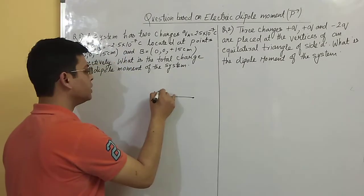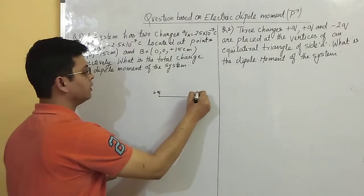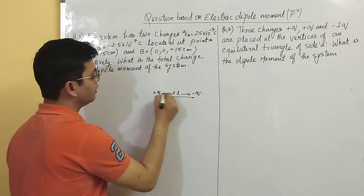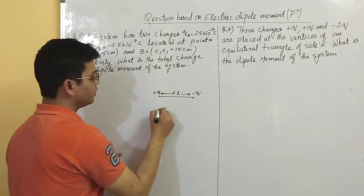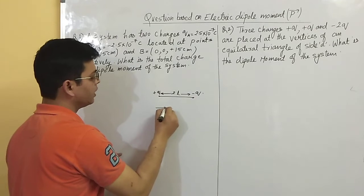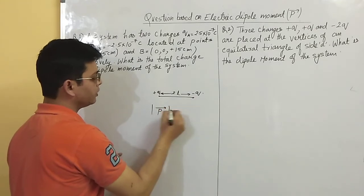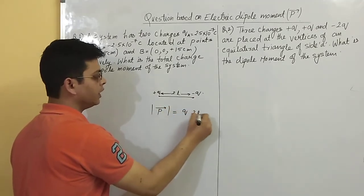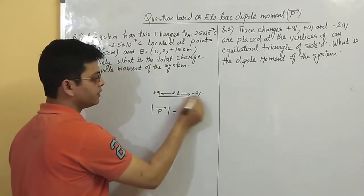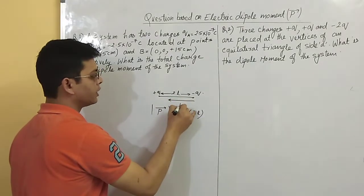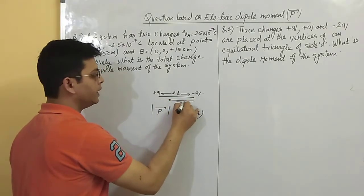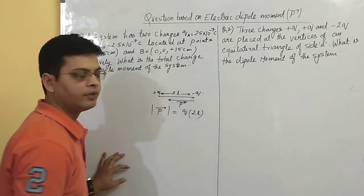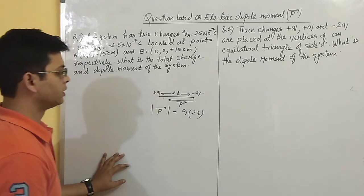There are two charges separated by distance 2L. The dipole moment is the magnitude of Q into 2L, where 2L is the distance between the two charges. The direction of dipole moment is from negative to positive charge.